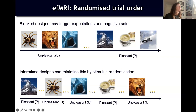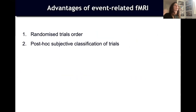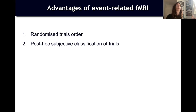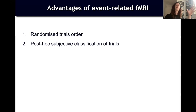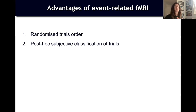Another advantage: event-related designs allow for post-hoc subjective classification of trials — sometimes you don't know what type a trial is until the participant tells you. For example, in pain studies, participants may rate the same stimulus intensity differently. To compare painful versus non-painful stimuli, you need to model each stimulus independently and then ask the participant which ones were painful, which you couldn't do with a blocked design.